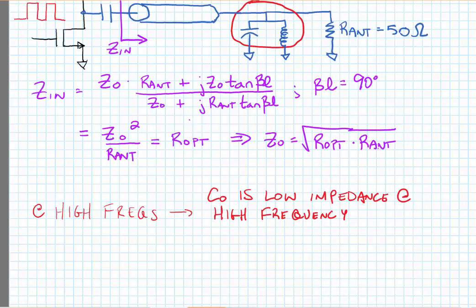And so at the fundamental frequency, we'll only see the antenna impedance. Pardon me, not the antenna impedance—we'll see the optimum termination impedance, assuming that we've designed the transmission line to create that impedance match.